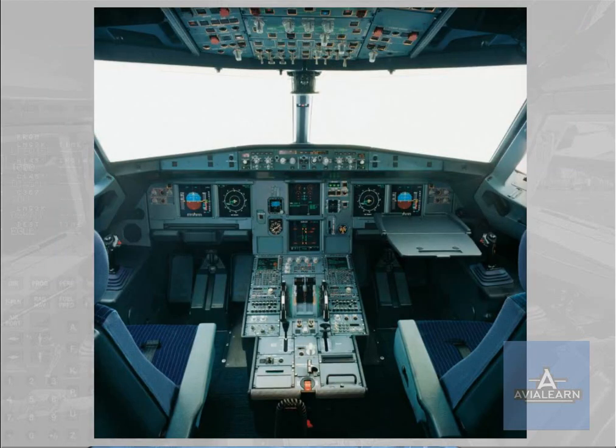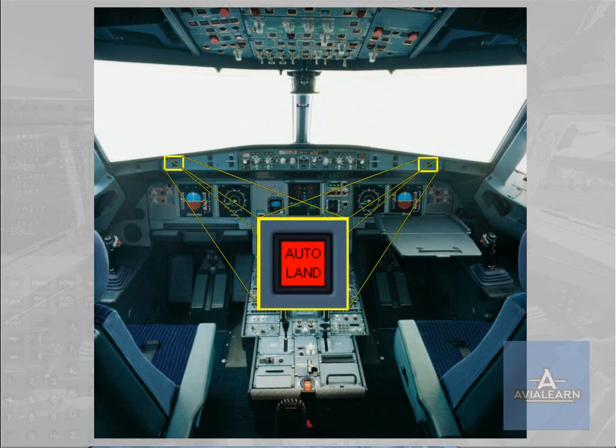An autoland red warning will be triggered below 200 feet radio altimeter if: both APs trip off; excessive deviations in LOC above 15 feet or glide slope above 100 feet occur; the LOC signal is lost above 15 feet or glide slope signal is lost above 100 feet; or a difference between both radio altimeter indications occurs.